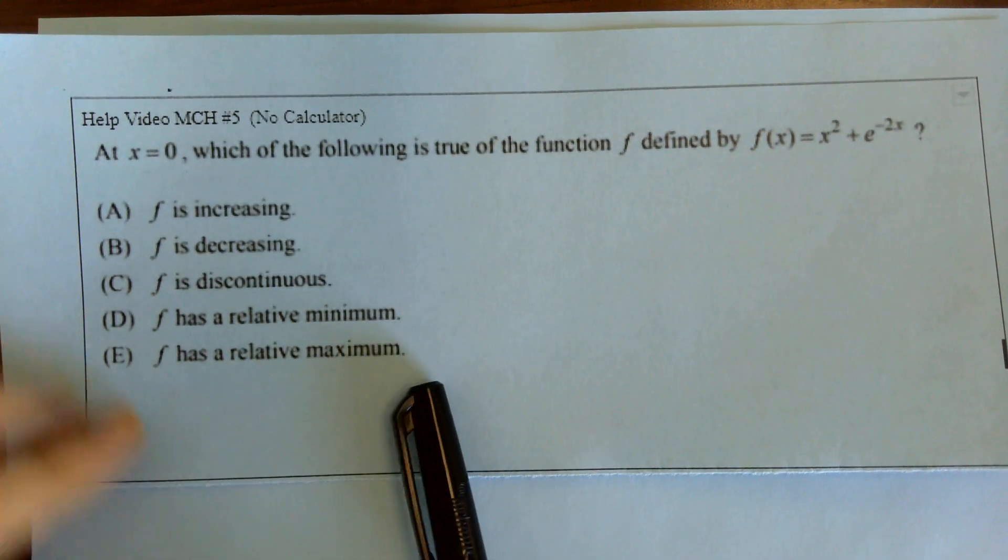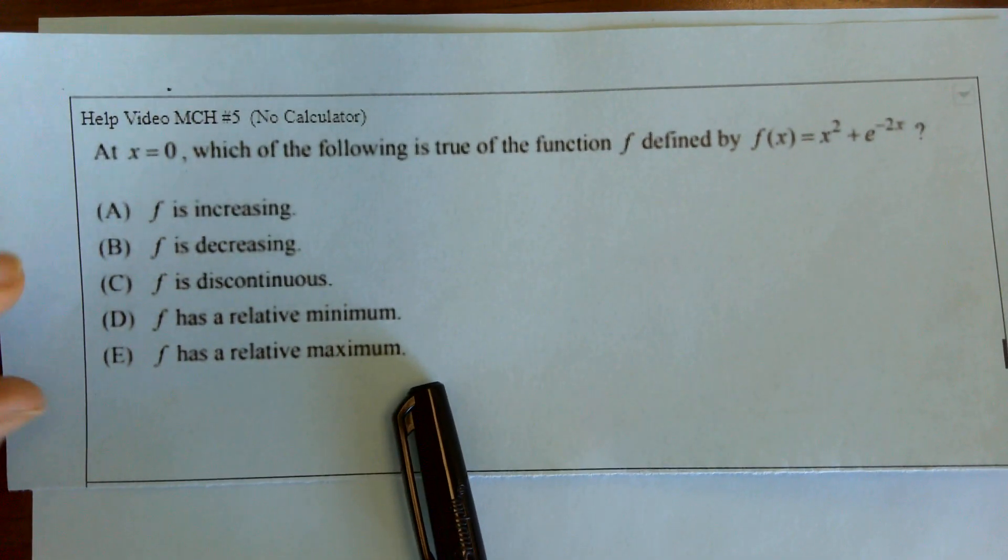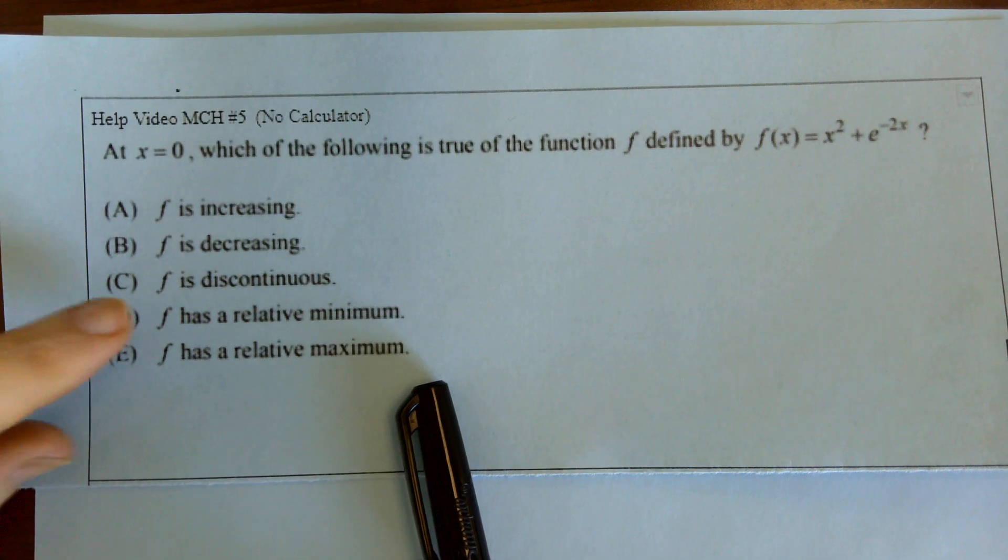And then we've got: f is increasing, f is decreasing, f is discontinuous, f has a relative minimum, or f has a relative maximum.